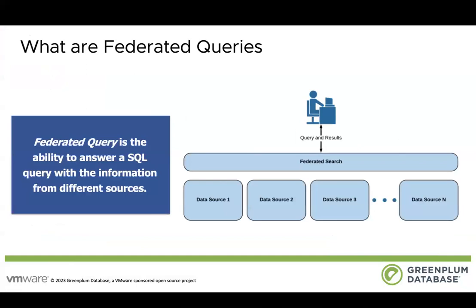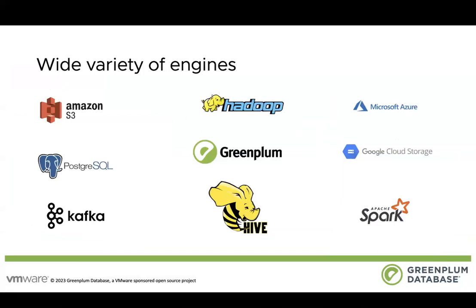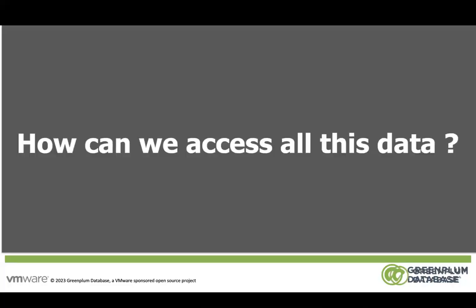Federated queries are the ability to answer a SQL query with information from different sources. As we see here, we have a number of different sources to store and manage data, like Greenplum, Hadoop, Hive, S3, and many more. The complexity is increased by the fact that all possible data can be stored in different formats and multiple systems based on operational requirements. So the question is, how can we access all this data from one system and one place, like Greenplum?